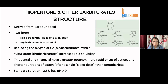In structure, it is derived from barbituric acid and comes in two forms: thiobarbiturates and oxybarbiturates. The thiobarbiturates are thiopental and thiamylal. The oxybarbiturate is methohexital. Replacing the oxygen at C2 with a sulfur atom increases lipid solubility. Thiopental and thiamylal have greater potency, more rapid onset of action, and shorter duration of action after a single sleep dose compared to pentobarbital.